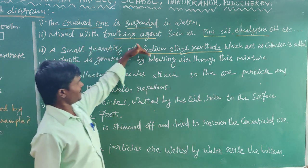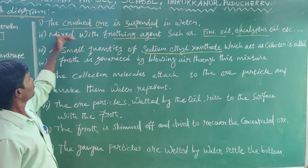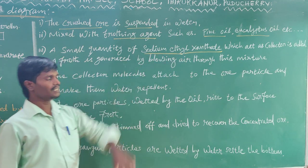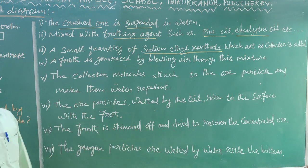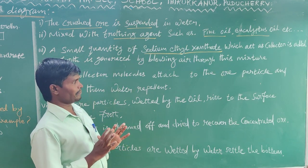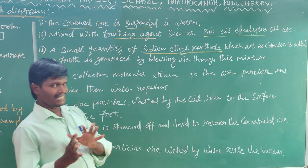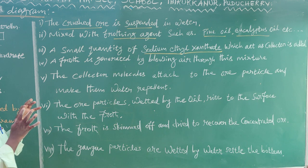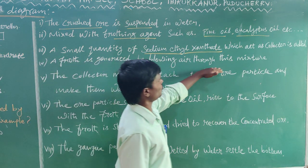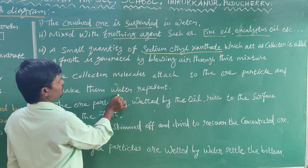A froth is generated by blowing air through this mixer. What we do is create a crushed water mixture. We collect the air in small quantities. Sodium ethyl xanthate is the collector. The water repels the caviar metals. The collector molecules attach to the ore particles and make the ore water-repellent.